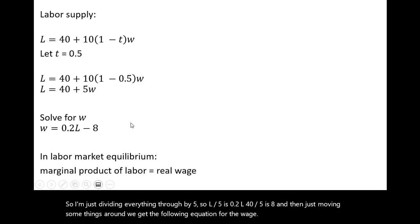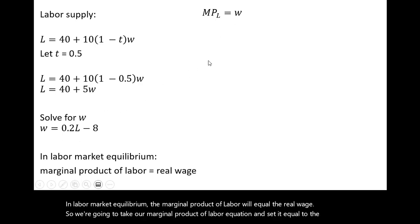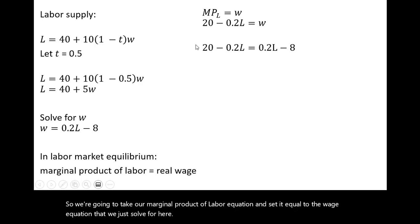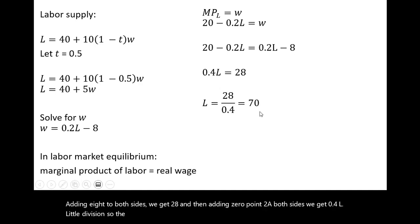In labor market equilibrium, the marginal product of labor will equal the real wage. So we're going to take our marginal product of labor equation and set it equal to the wage equation that we just solved for here. And now we're going to solve this for L. Adding 8 to both sides, we get 28. And then adding 0.2L to both sides, we get 0.4L. A little division, so the equilibrium level of employment is 70.